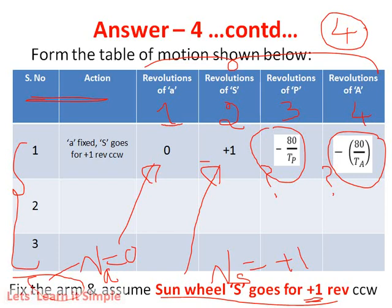This completes the first row, which is very, very important. If you are able to crack the first step, you are done with the problem. At the end of step one: revolution of arm a = 0, revolution of sun S = +1, revolution of P = −80/TP, and revolution of annulus A = −80/TA.